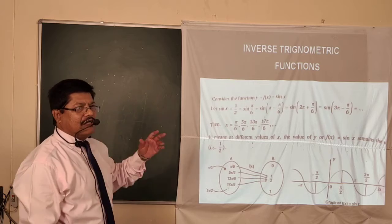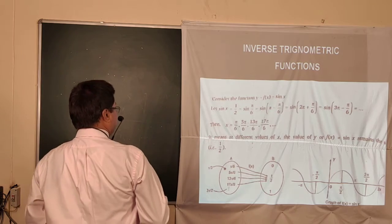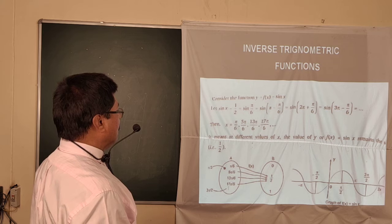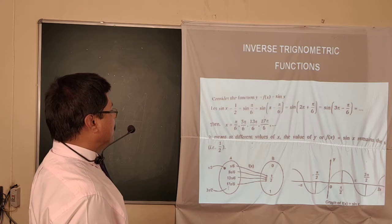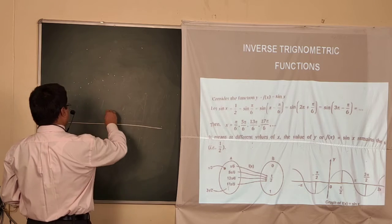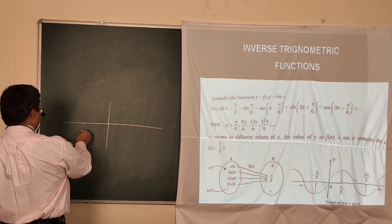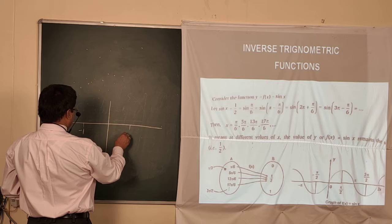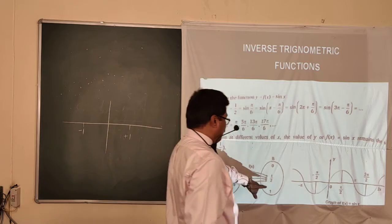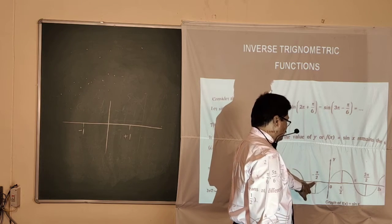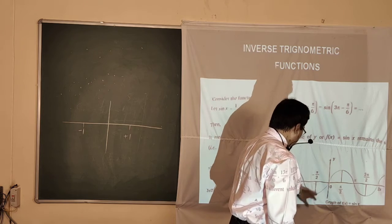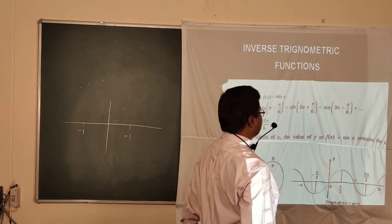A many-one function does not have an inverse function. So when we restrict the trigonometric function, we can define the inverse. The minimum value of sin is -1 and the maximum is +1. Looking at the graph: for π it is 0, for 3π/2 it is -1, for π/2 it is 1. So the restricted values go from -1 to +1.